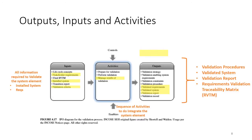The inputs to this process are an installed system — the result of the transition process from the previous video — and the set of business and mission stakeholder requirements. The stakeholder requirements are used as the basis for developing validation test procedures, which is the output of this process. In addition, there's the validation report with all the results of the validation procedures, the validated system itself as an output, and the requirements validation traceability matrix that shows all of the requirements have been tested with the validation test procedure.